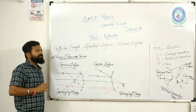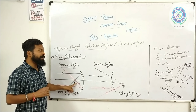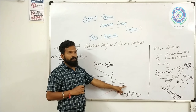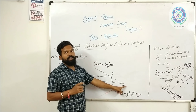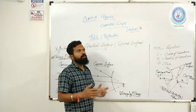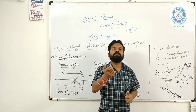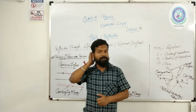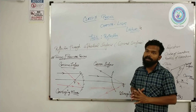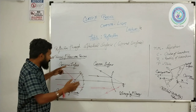तो दो definitions हैं: first — reflected rays actually meeting at a point, and second — reflected rays appear to come from a point. And that point is known as the principal focus of a spherical surface. Spherical surface का principal focus वो point हो सकता है जहाँ पे reflected rays actual में meet कर जाएं, या वो point जिस पे लगे कि reflected rays वहाँ से आ रही हैं — दोनों को principal focus कहलाएगा।